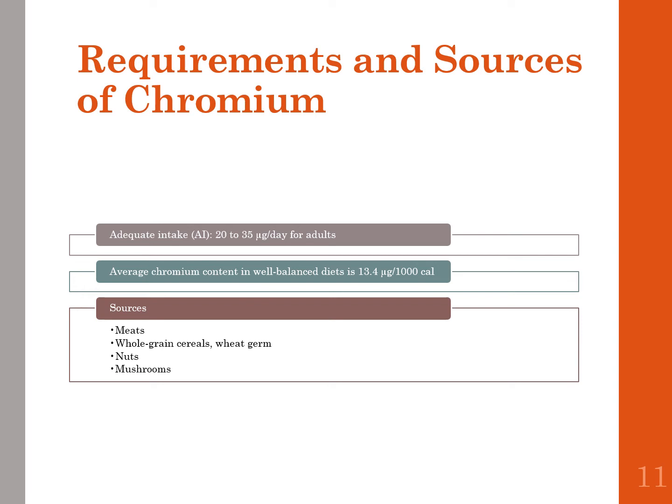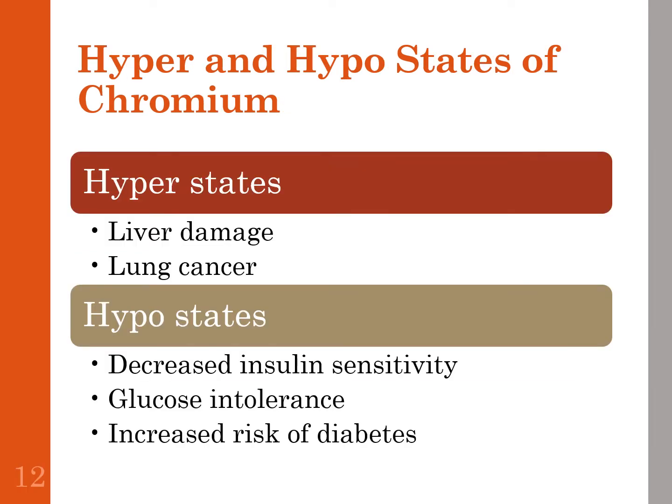Sources of chromium include meat, whole grain cereals, wheat germ, nuts, and mushrooms. The Safe Drinking Water Act requires the EPA to review and update national primary drinking water standards. The current EPA standard for chromium in public water systems is not to exceed 100 parts per billion. We do expect some mineral content in water supplies, but they are regulated.